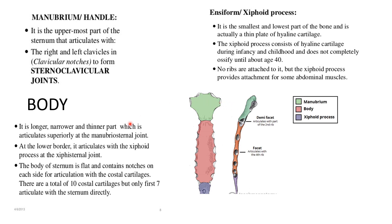The body of the sternum has seven facets for articulation of the ribs. The xiphoid process is the last part; it consists of hyaline cartilage during infancy and childhood, which ossifies by around age 40, and there are no rib attachments at the xiphoid process.